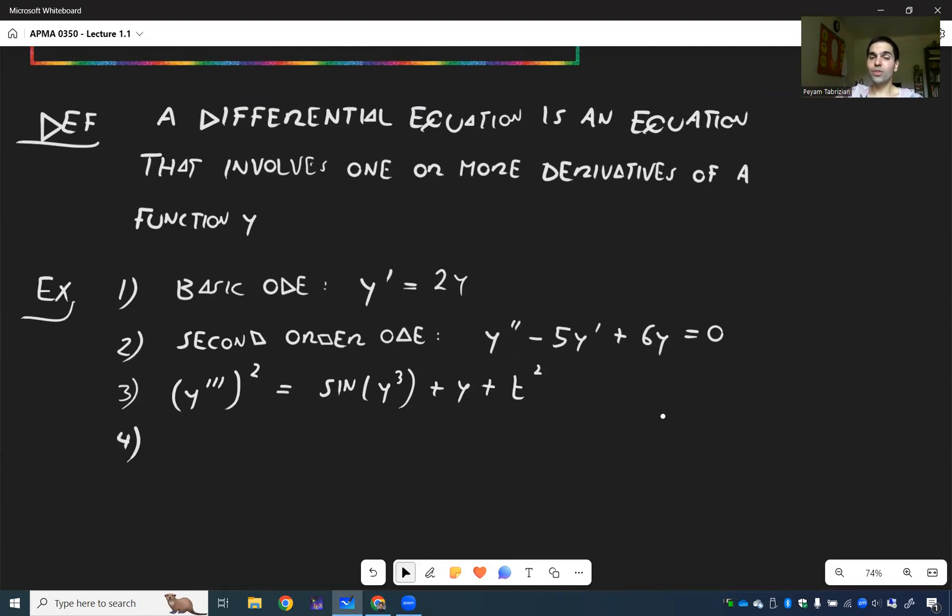Another interesting thing we'll also talk about is systems of ODE. And that's when two or more functions are coupled with each other. Like X prime of T equals 2X of T minus 3Y of T and Y prime of T equals 5X of T plus 6Y of T. So you see here, X and Y are two functions that are coupled together. And our goal will be to uncouple them.